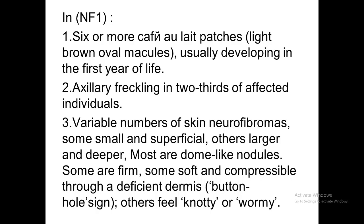In neurofibromatosis type 1, we need the following features. First, six or more café-au-lait patches — these are light brown oval macules usually developing in the first year of life, so they are a very early sign. Second, axillary freckling in two-thirds of affected individuals. Third, a variable number of skin neurofibromas — some small and superficial, others large and deep. Most are dome-shaped, firm nodules; some are soft and compressible. You can compress a nodule through a defect in the dermis — this is called the buttonhole sign. Some feel knotty or worm-like and are firm and not compressible.